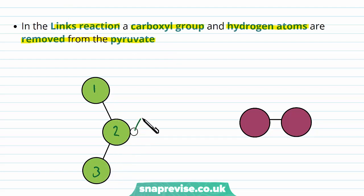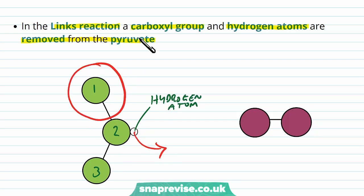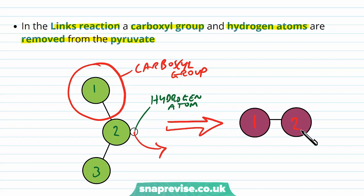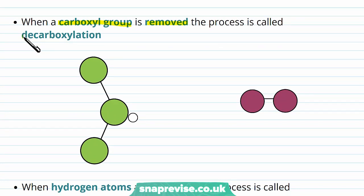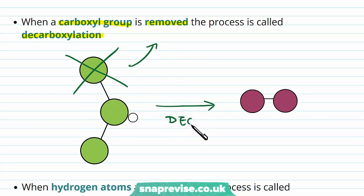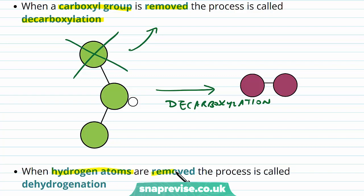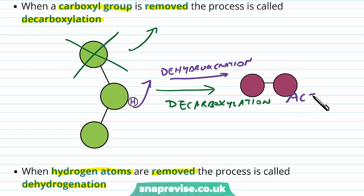So essentially, the pyruvate has a hydrogen atom on its molecule, and this will be removed. Also a carboxyl group, which contains one of the carbons, will also be removed. The removal of both leads to the formation of a two-carbon acetyl group. Whenever a carboxyl group is removed from something, we call it decarboxylation. So in this case, we're taking off one of the carbons to remove a carboxyl group — this is the process of decarboxylation. Whenever hydrogen atoms are removed, we call this dehydrogenation, sometimes referred to as oxidation as well. So a hydrogen will also be taken off, and both of these processes lead to the formation of the acetyl group.